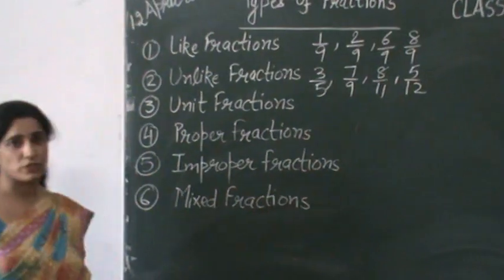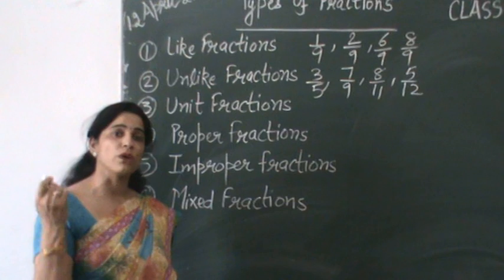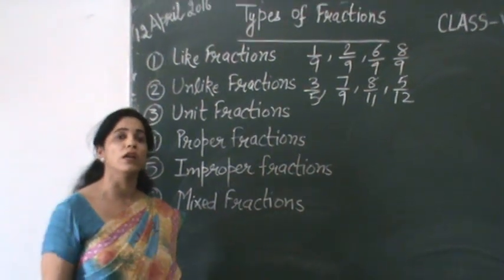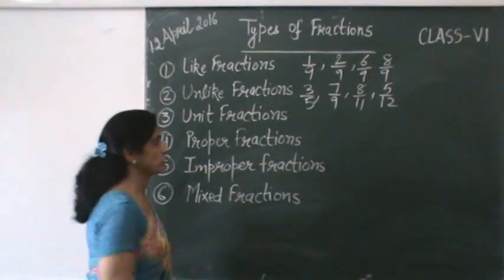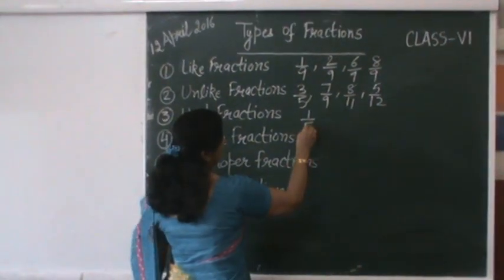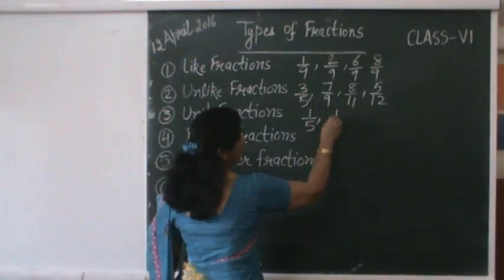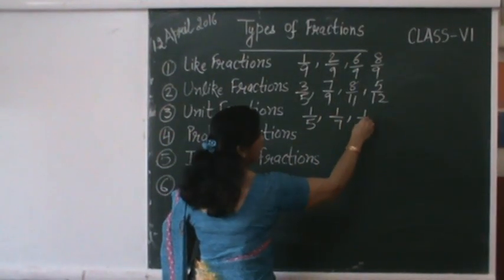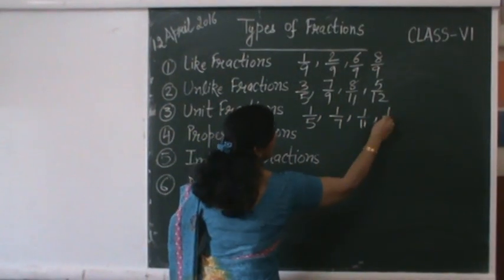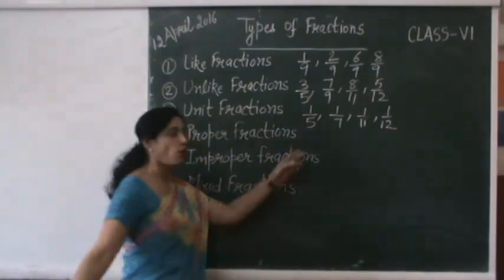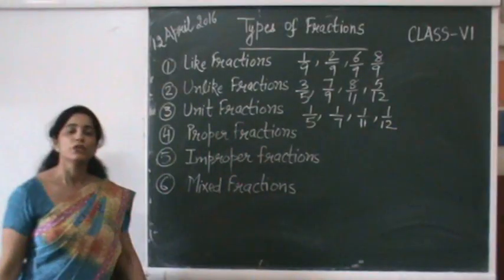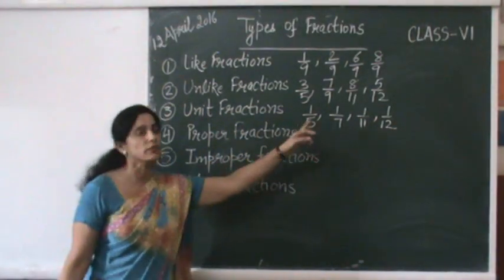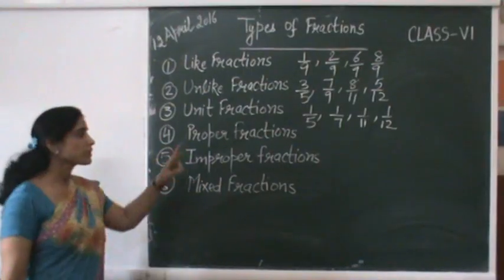Unit fractions. Fractions with the numerator 1 are called unit fractions. For example, 1 by 5, 1 by 7, 1 by 11, and 1 by 12 are all called unit fractions, where all the numerators are 1.